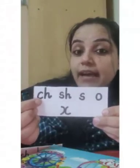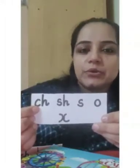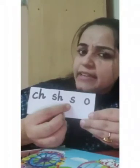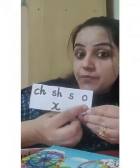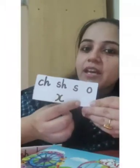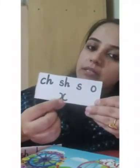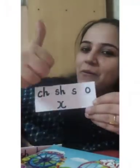Whenever your word ends with CH, like 'torch,' the plural is 'torches.' When it ends with SH, like 'brush,' it becomes 'brushes.' When it ends with S, again add ES. When it ends with O, like 'tomato,' the plural is 'tomatoes.' X — like 'box' — becomes 'boxes.' Remember the trick!